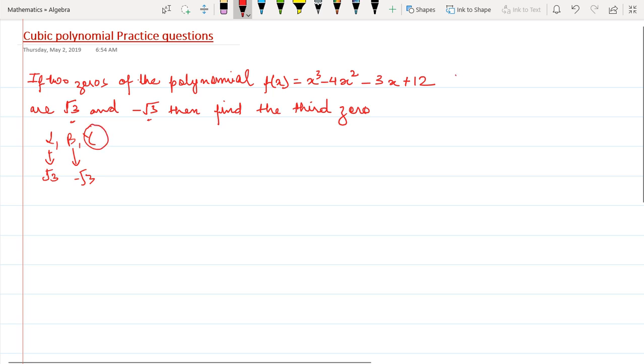Now this is a very simple question because I know a few things: the sum of the roots, that is alpha plus beta plus gamma, is equal to -b/a. And -b/a in this equation is -(-4)/1, which equals 4. I'll just use the same thing here.